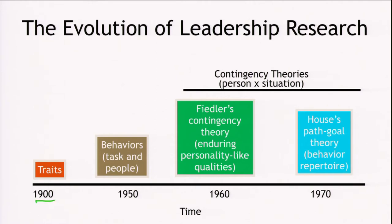The four theories: around the 1900s, the trait theories; around the 1950s, the behavioral theories which talk about tasks and people; around the 1960s, Fiedler's Contingency Theory; and around the 1970s, House's path-goal theory. These were the theories which have emerged till 1970.